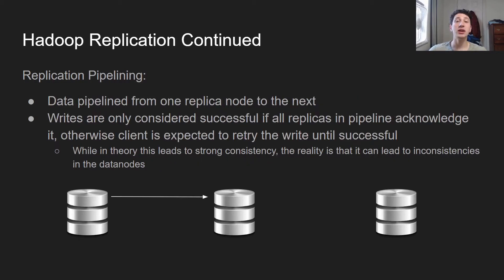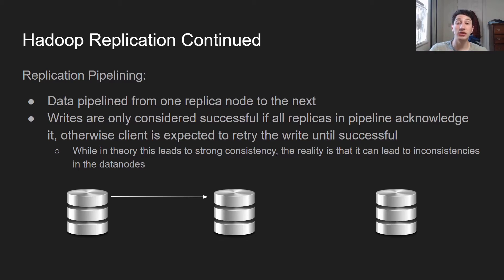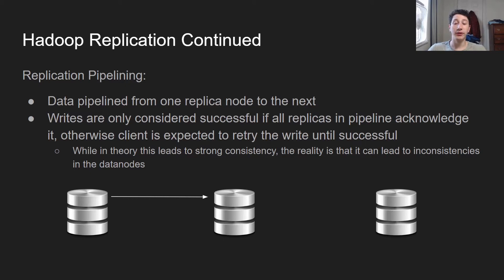So how does replication actually work? There's something called pipelining. Basically the replicas are arranged into some order and the data is pipelined from one replica to the next. On a write, append, or truncate, writes are only considered successful from the client's point of view if all of the replicas in this pipeline actually acknowledge them. Even though in theory this should lead to strong consistency, the issue is that if the first replica receives a write, it's going to commit that to itself, and if the second and third replicas don't ever acknowledge the write, the client is going to receive a failure. However, the write is still in one of the replicas. So when a client receives a failure on a write, it needs to keep retrying until it receives a success message. The first replica sends the write to the second one, which sends it to the third, which then sends the acknowledgement back — once this whole process is complete, the client sees its write as successful.